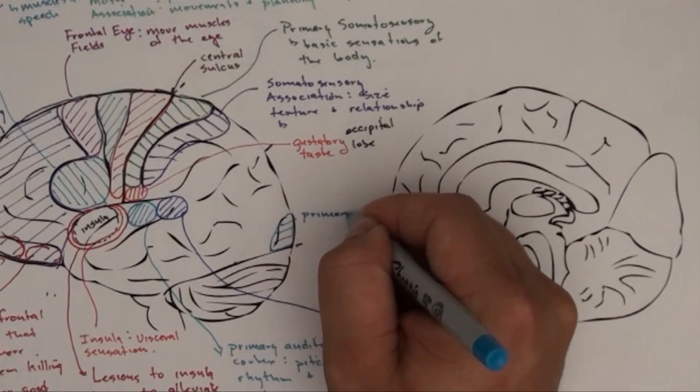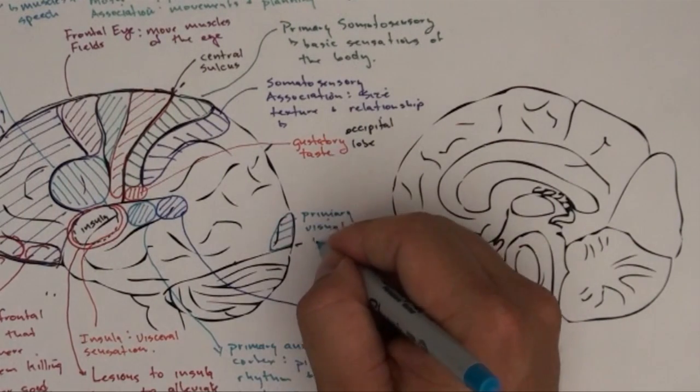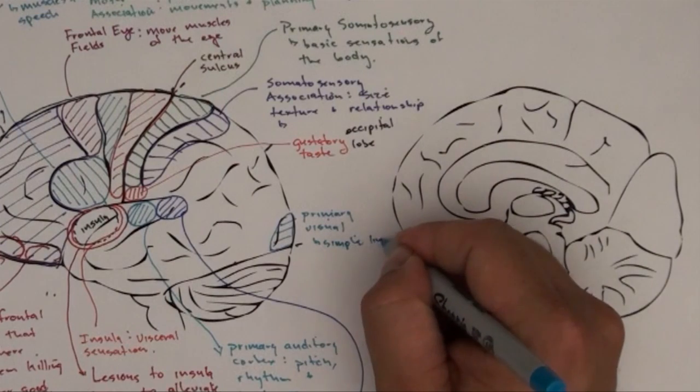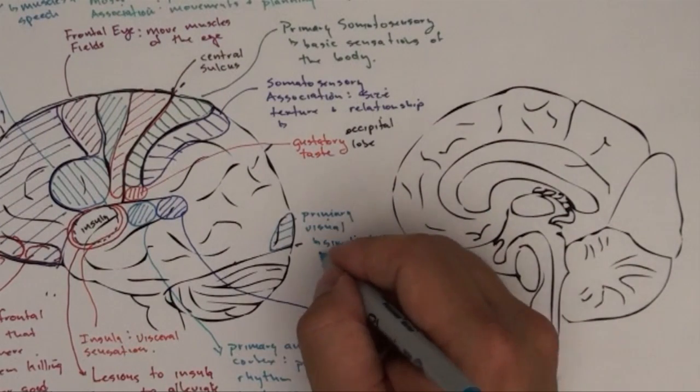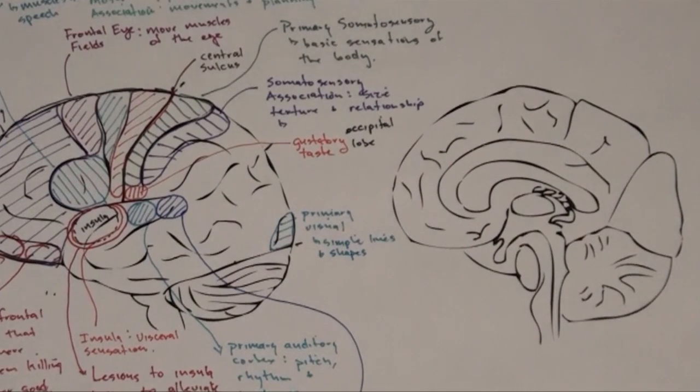Here is your primary visual, and it's going to be simple lines and shapes. Some of this processing occurs early on in something called the thalamus, but a lot of it occurs in primary motor.